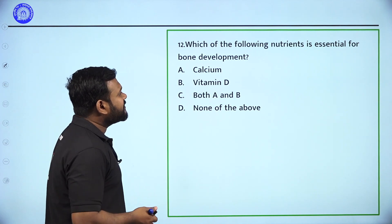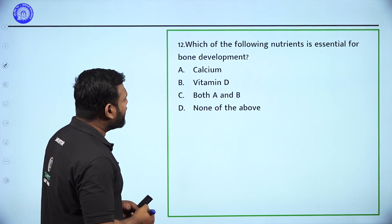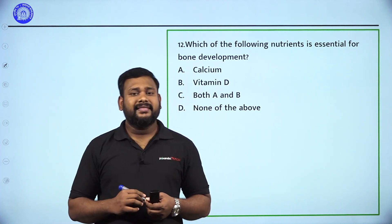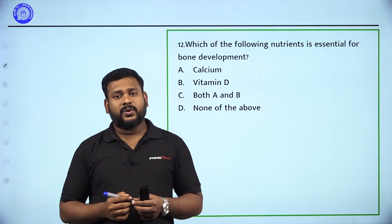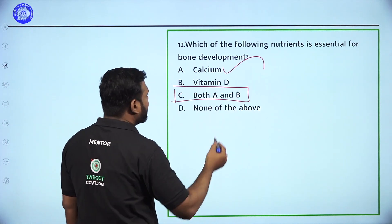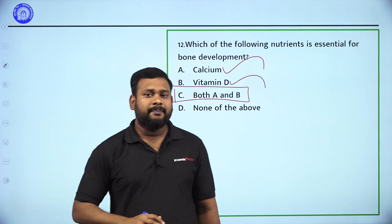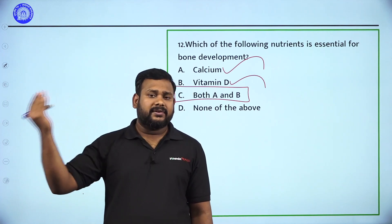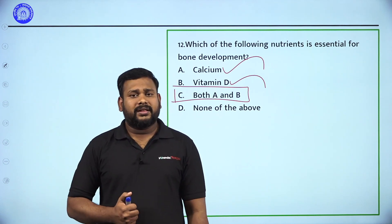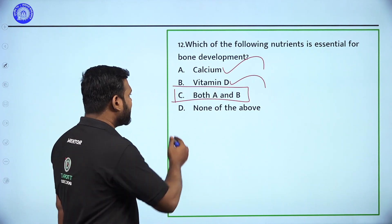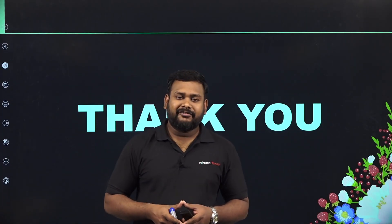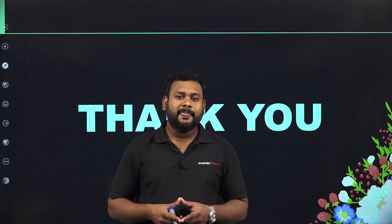Next question: Which of the following nutrients is essential for bone development? Options: Calcium, Vitamin D, both A and B, none of the above. The answer is C — both A and B. Both Calcium and Vitamin D are important for bone development. Vitamin D helps the body absorb calcium more effectively. This concludes the first set of questions from Chapter on Components of Food.